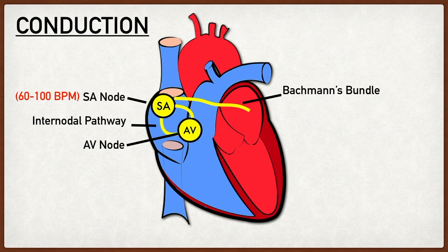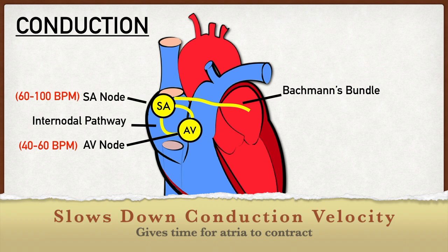Similar to the SA node, the AV node is also composed of lots of pacemaker cells that can generate their own action potentials. The key difference is that the AV node's pacemaker cells generate action potentials at a slower rate — approximately 40 to 60 beats per minute. This is why in a normal functioning heart the SA node is the primary pacemaker: it generates action potentials at a faster rate, essentially masking the AV node.